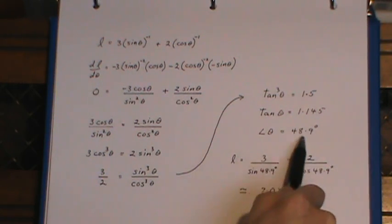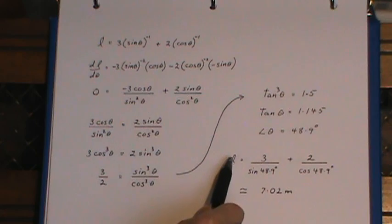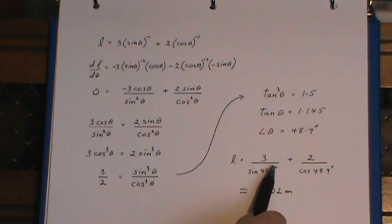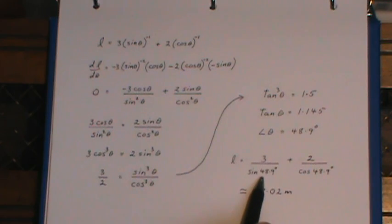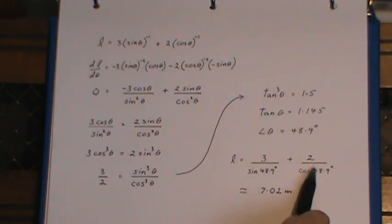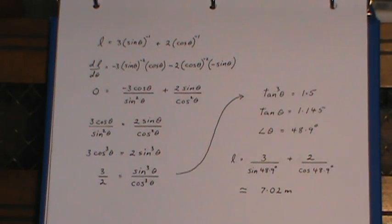And then all I had to do was go back to my original length formula—this is the L1 plus L2—it was 3 over sine theta and 2 over cos theta, evaluated that, and we've got the shortest distance for PQ, which is then the longest ladder that we could get around the corner.